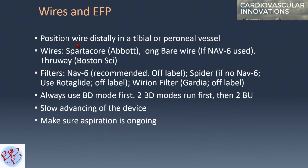For wires and embolic filter protection: position your wire distally in a tibial or peroneal vessel to stabilize the running of your JetStream. The three most compatible wires are the Spartacore, the long bare wire used with the NAV6, and the Throway wire from Boston. We commonly use the NAV6 filter; if using a Spider filter, use Rotoglide to avoid the device getting stuck on the wire. We're also testing the Weryon filter from Guardian. Always run two blade down passes first, then two blade up passes, with very slow device advancement to minimize distal embolization, and always keep the aspiration port active.